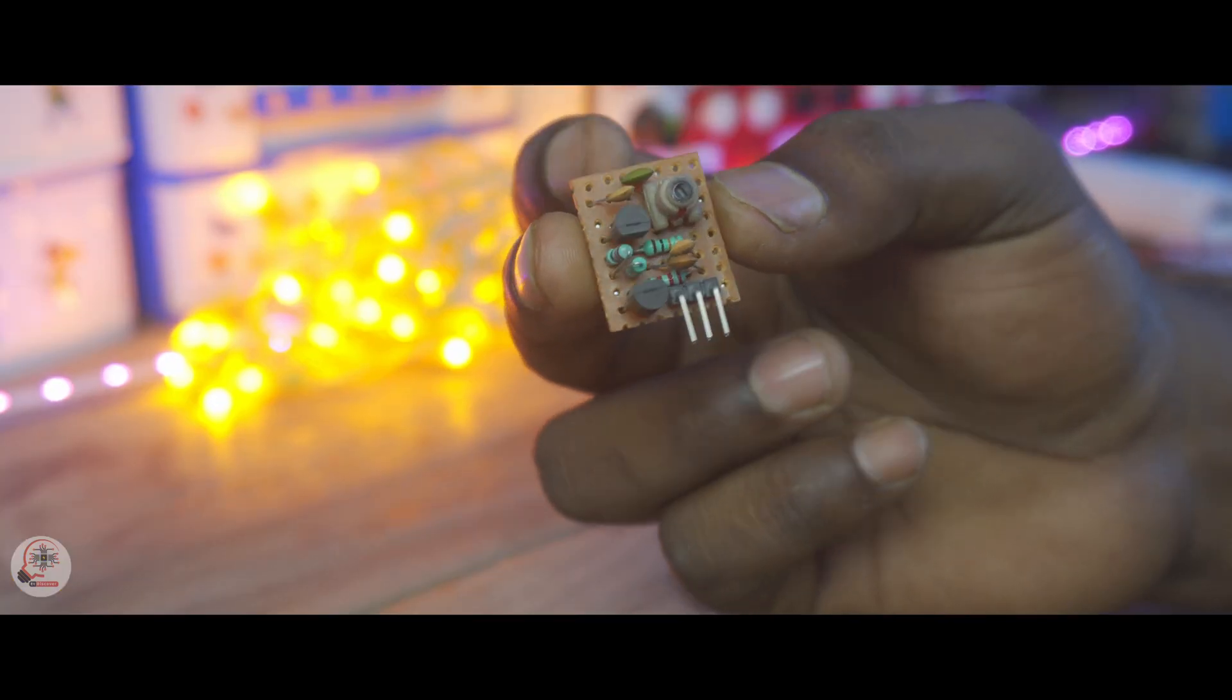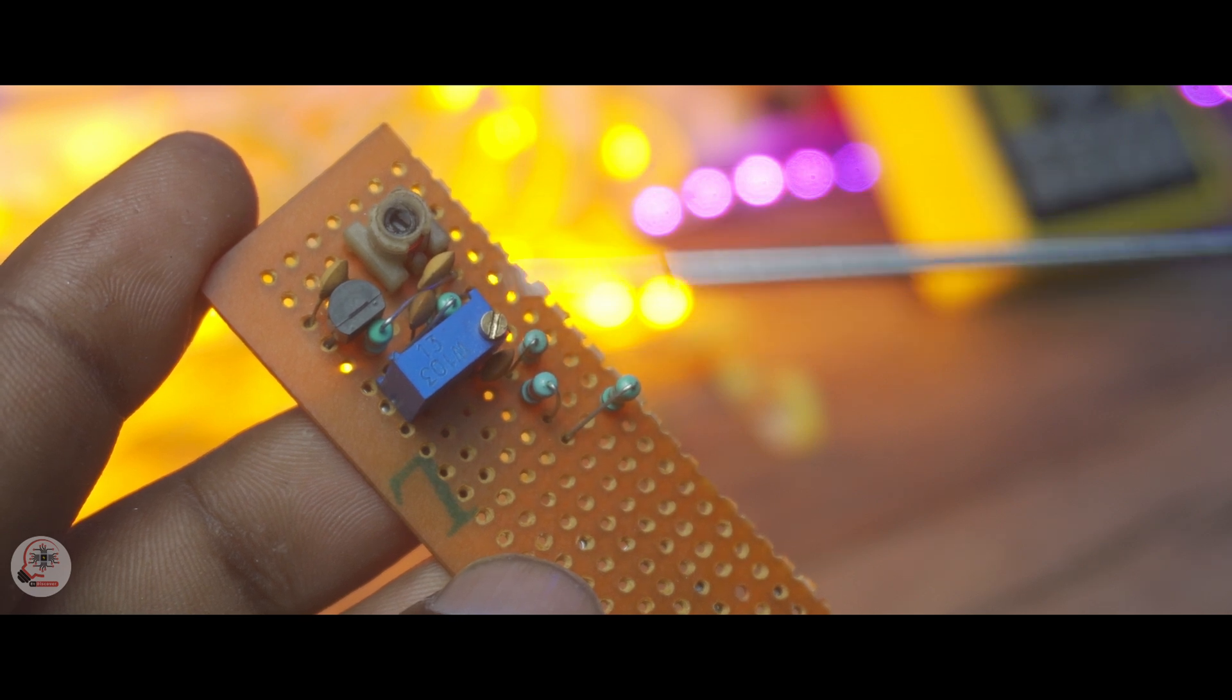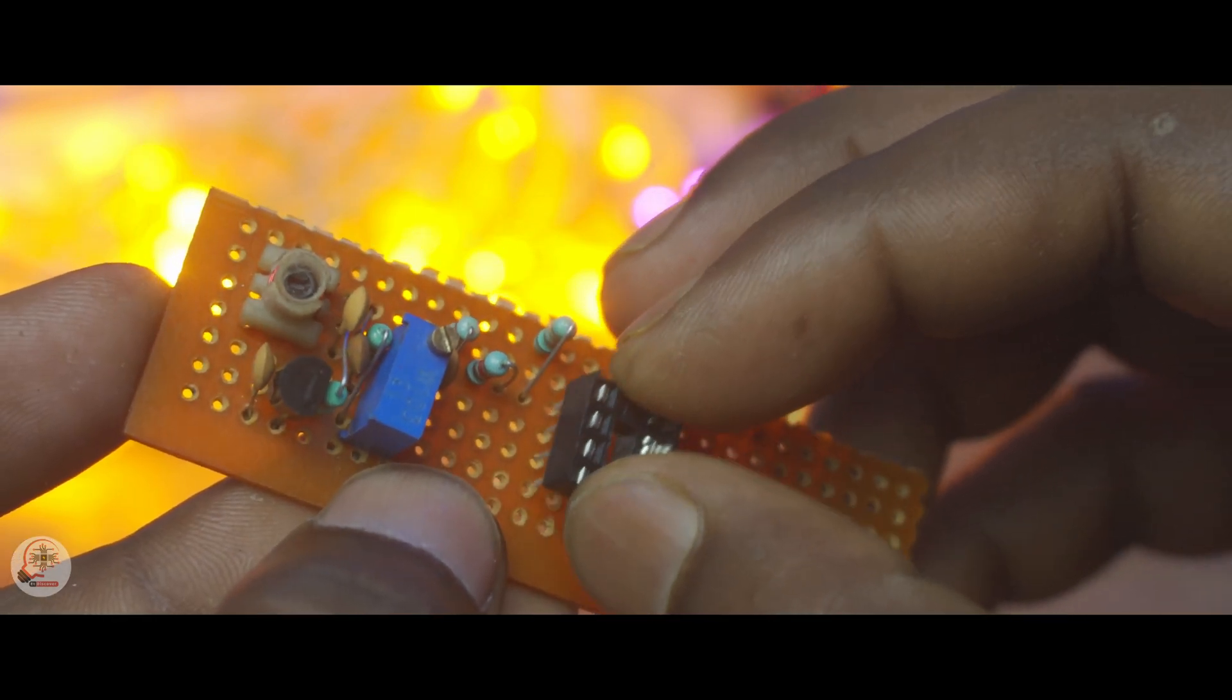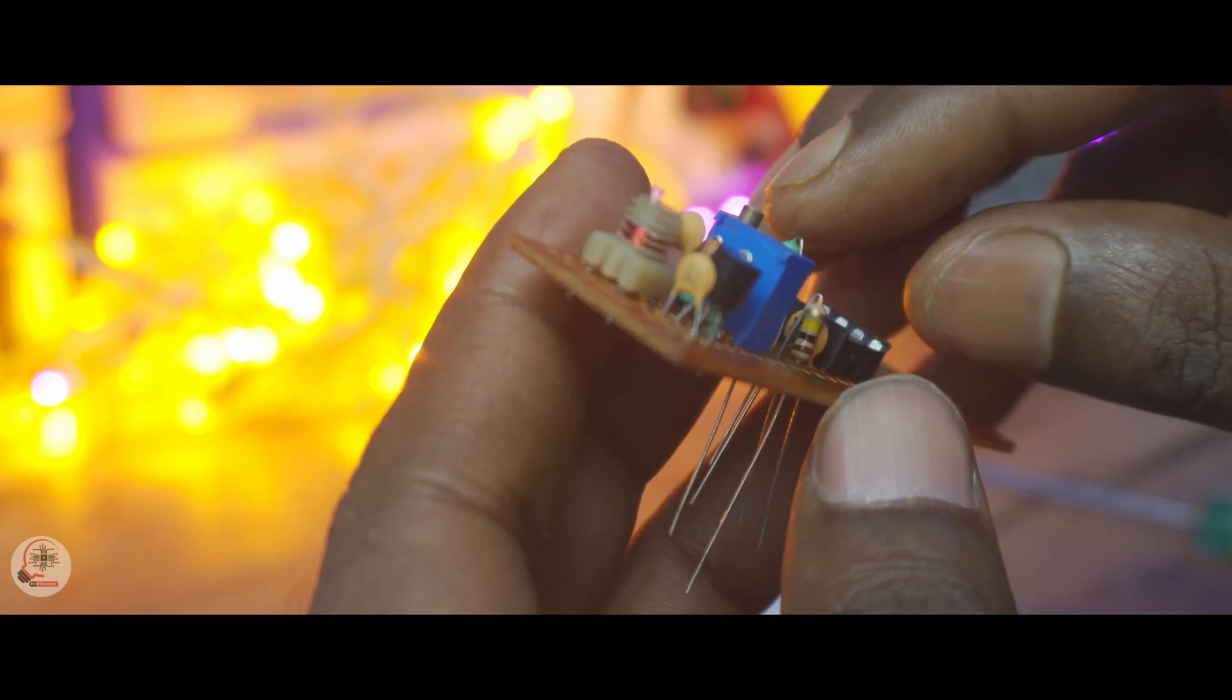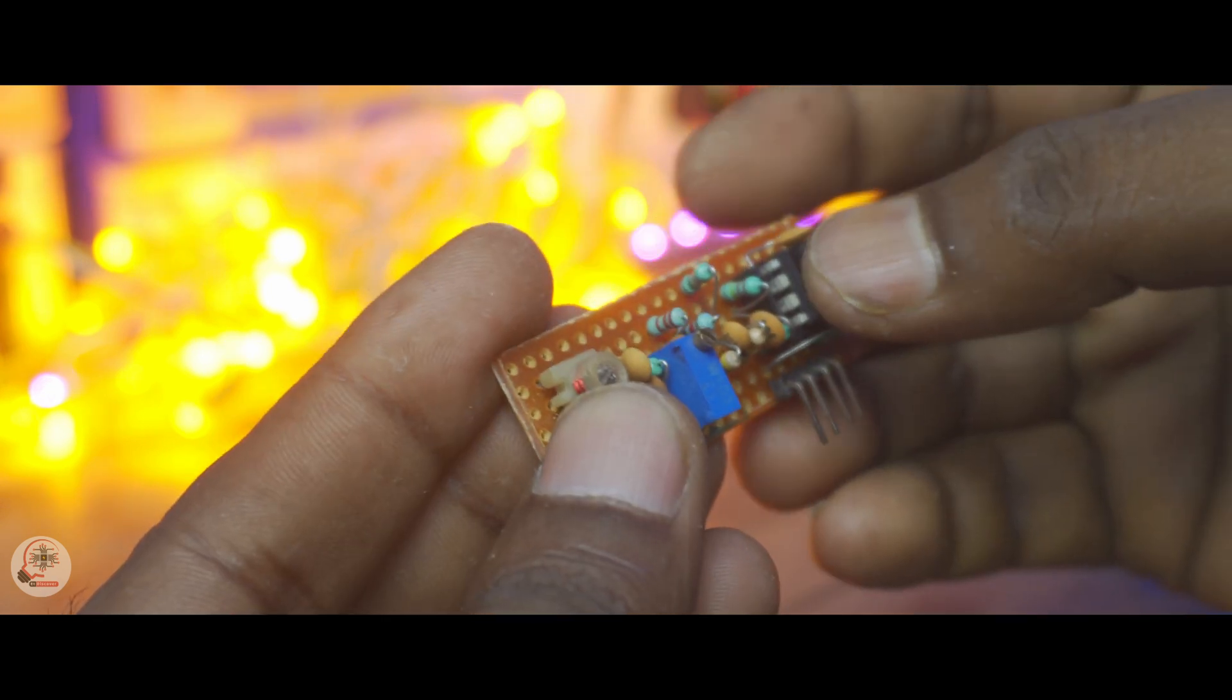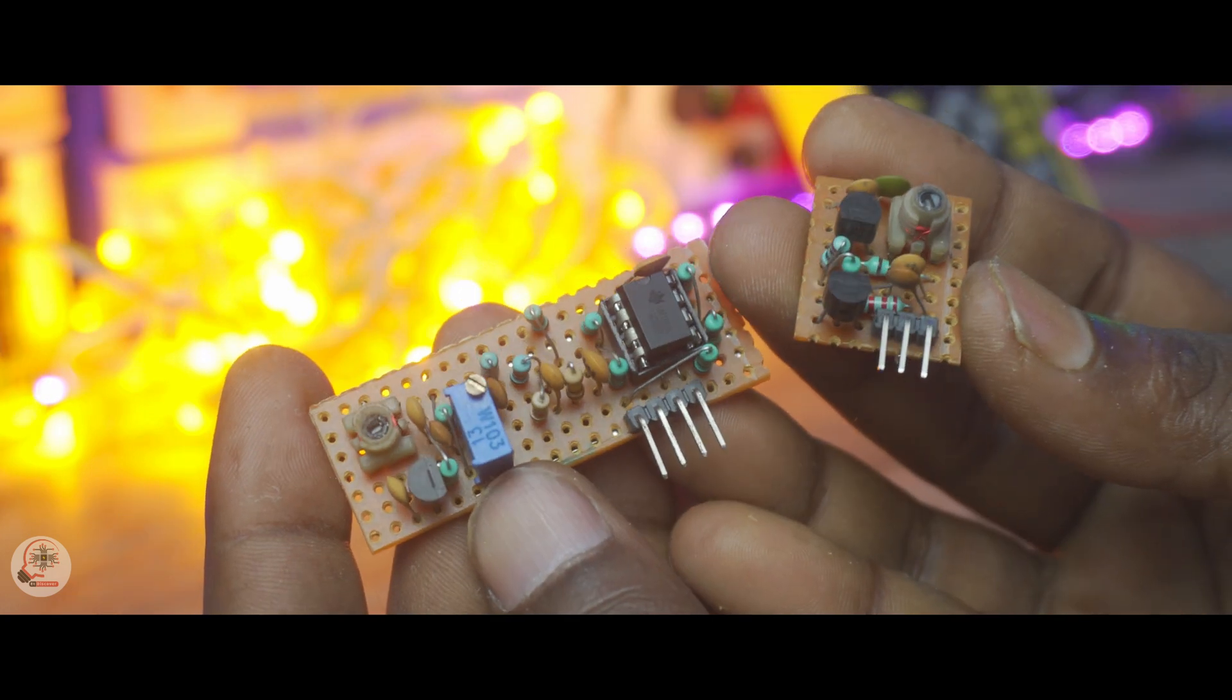Okay guys this is the final look of my transmitter. And this is the receiver and its job is to collect the signal from the transmitter. I will install this op-amp to modify the signal. Next the necessary components will be installed in this board. And this is my final transmitter and receiver.